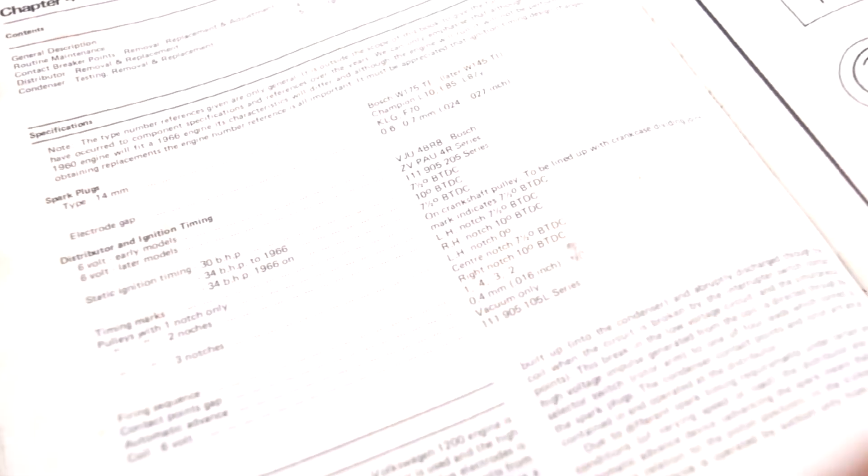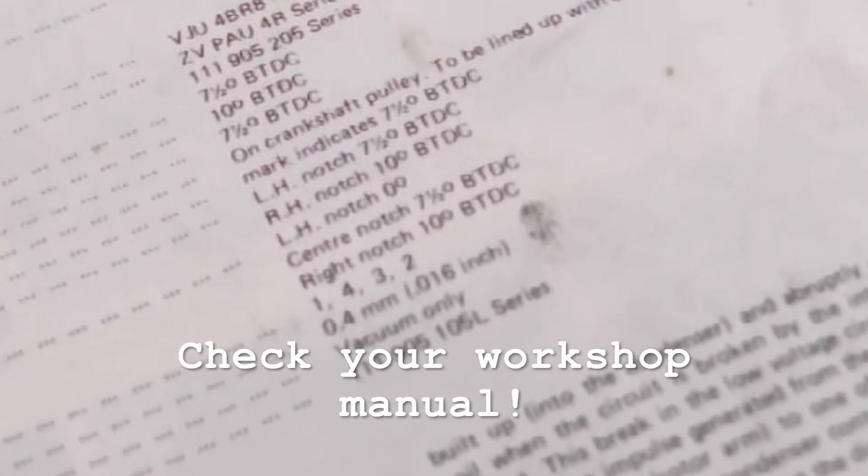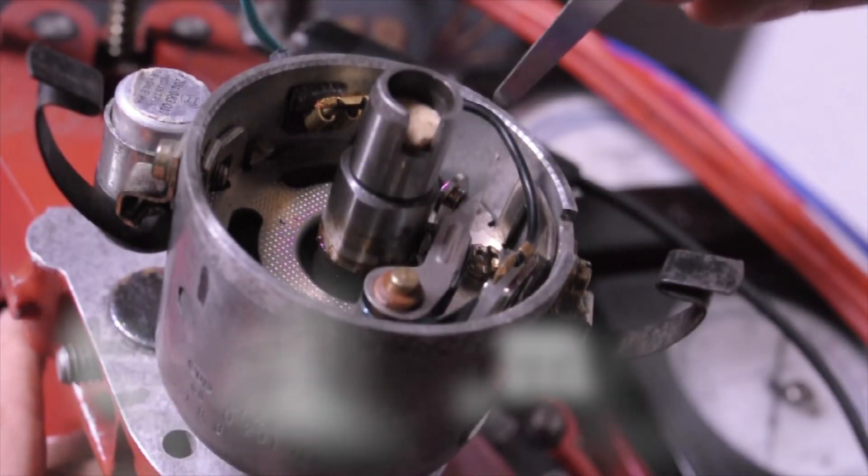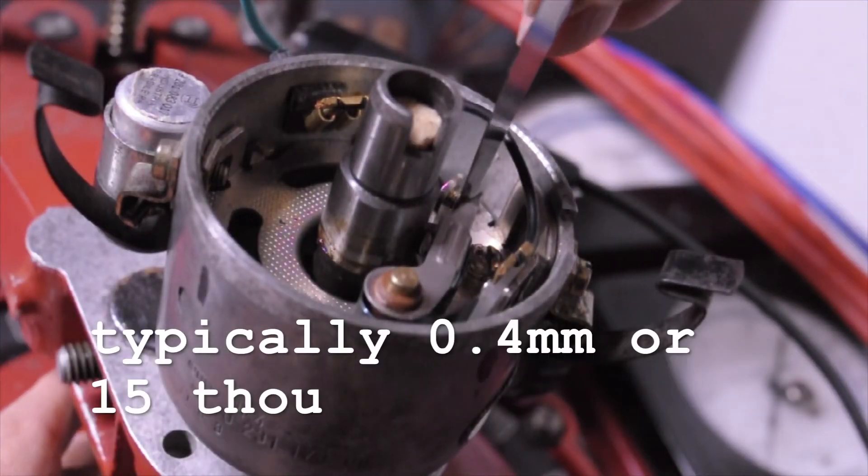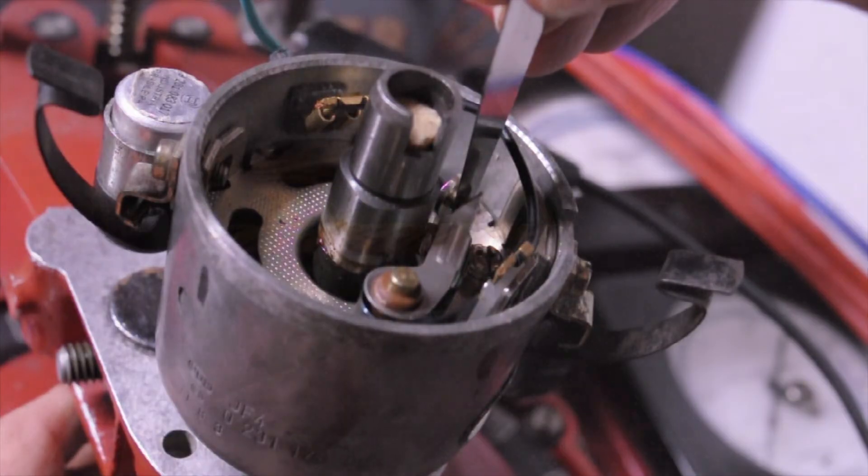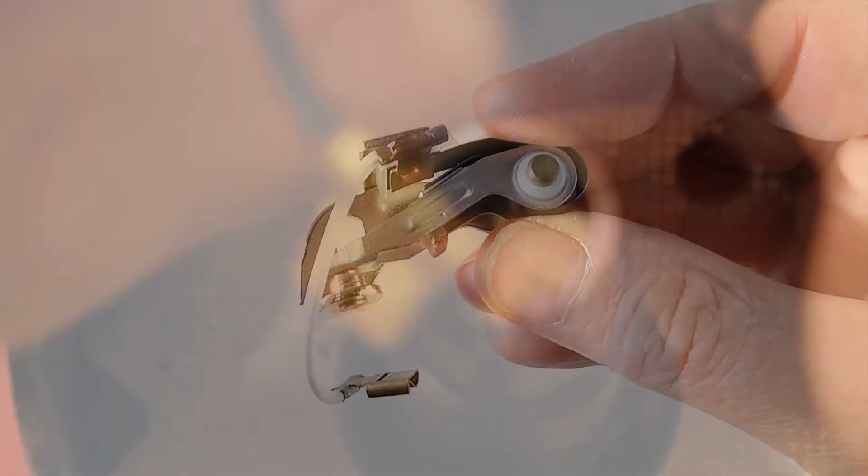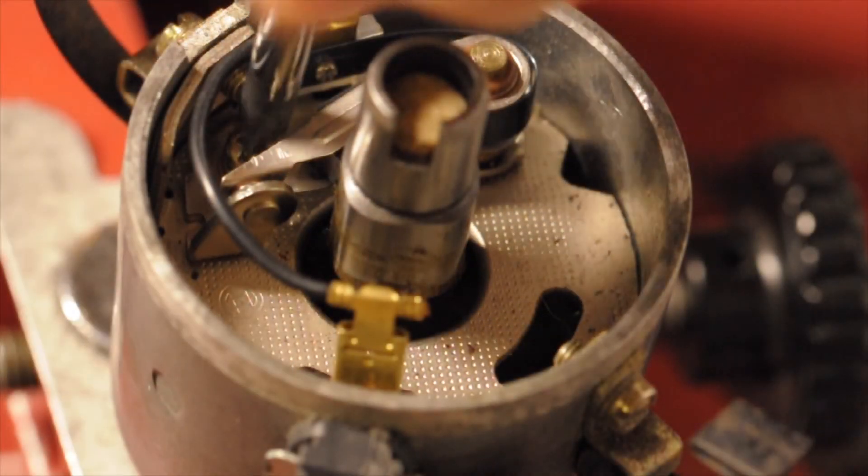Although they're made of a tungsten alloy, it's no wonder that the points need maintenance. At regular intervals, the maximum gap of the open points needs to be measured and adjusted if necessary. Eventually, pitting on the contacts themselves and wear on the rubbing block mean that the contact breaker set will need replacing, usually after about 6,000 miles.